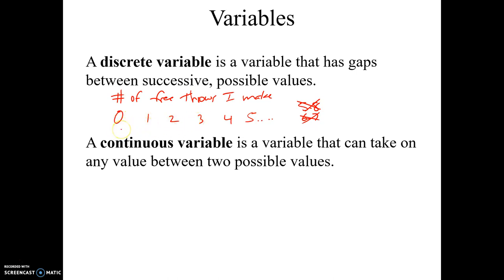It can be 0 or 1 or 2 or 3 or 4 or 5 or 6 or 7 or 8 or 9, but I can't make 0.3 or 0.4 or 0.5 free throws. So there's a gap between these. Usually discrete variables are variables that can only be written as counting numbers, like 0, 1, 2, 3, 4, 5.